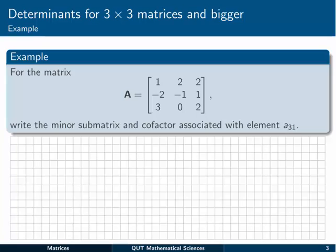The matrix A there, 1, minus 1, 2, 2, minus 2, minus 1, 1, and 3, 0, 2. Have a go at writing the minor submatrix and cofactor associated with element A31. Give yourself a couple of minutes to try that, and then come back and follow through with me.